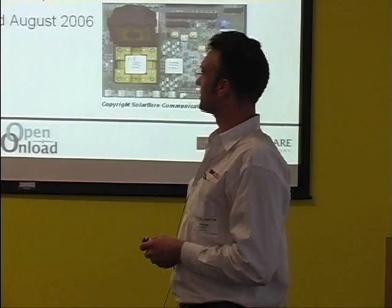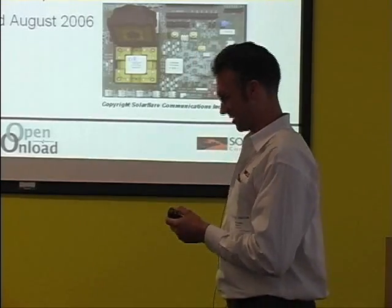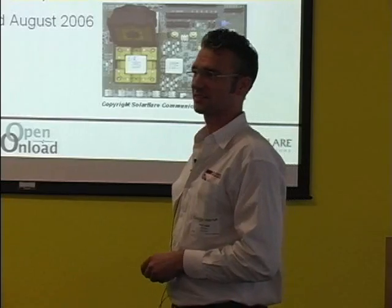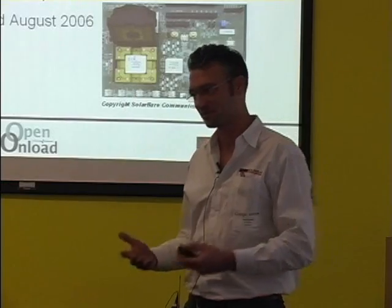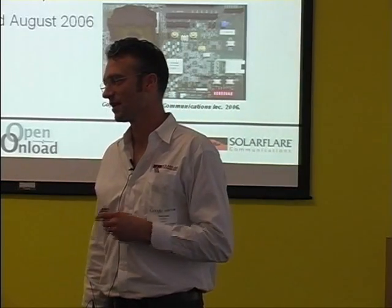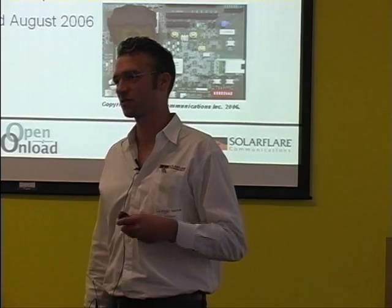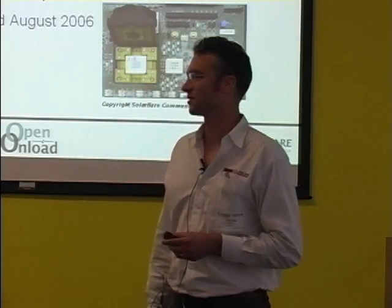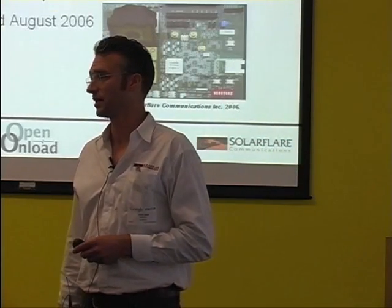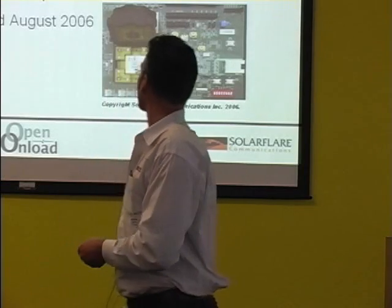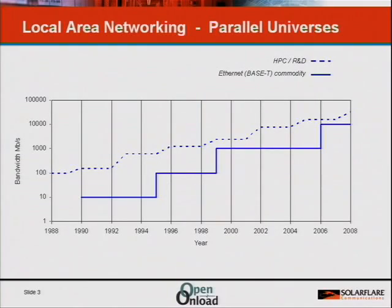For a bit of revisionism, the picture at the top is not Ethernet. It's actually the Cambridge Ring, which is another local area network invented at about the same time as Ethernet. Everybody thinks about Ethernet over the years — it's obviously been the dominant local area network — but there have been lots of others. Some like ArcNet are in use today. In one sense, local area networking has been a set of parallel universes over the years.